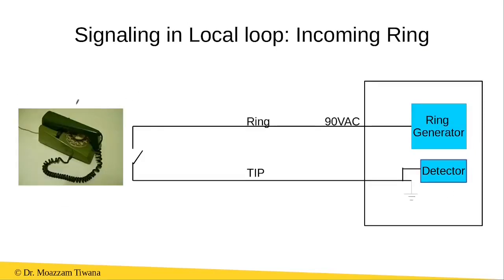Similarly, when the telephone is in the on-hook state and there is an incoming call for this telephone, the exchange uses the ring generator in order to send a 90 volt AC current to this telephone, so the telephone produces a ringtone.